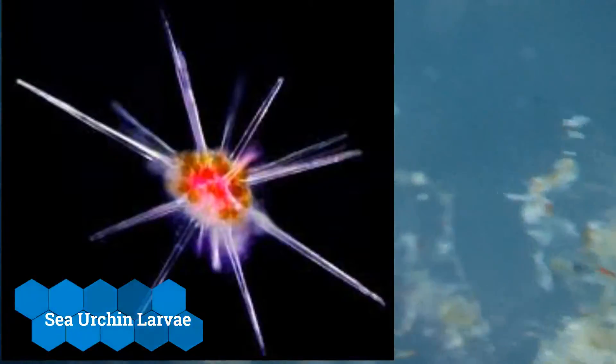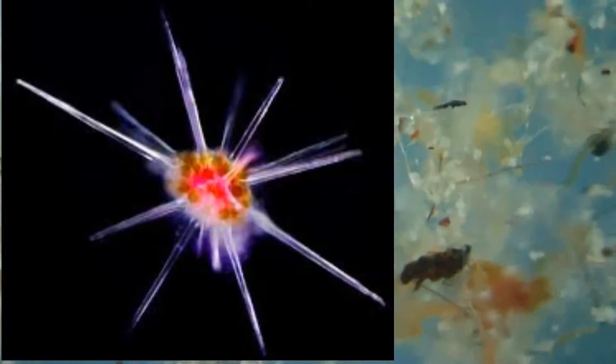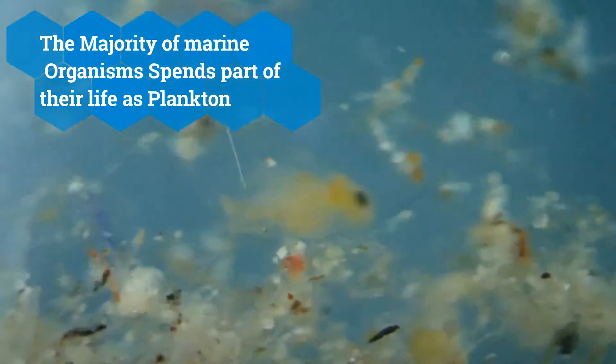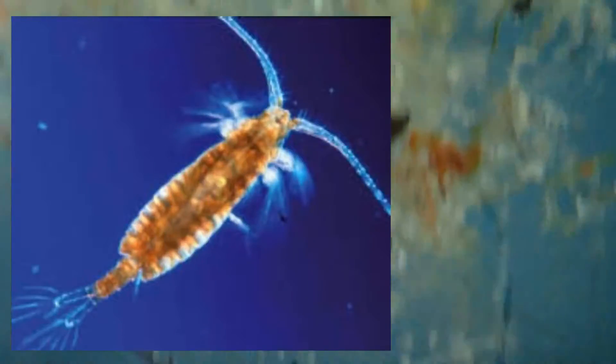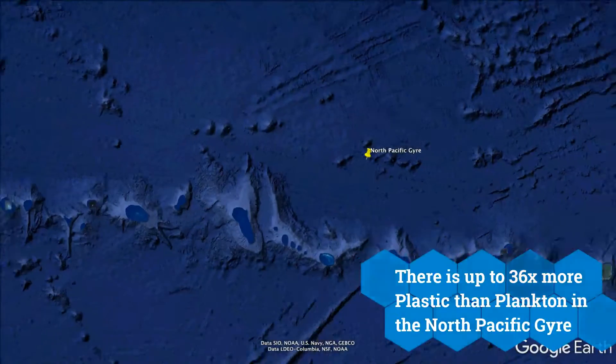There are about one million planktons in one teaspoon of water. This equals around 20 grams of plankton in one cubic meter of water. Clearly there is a lot of plankton — in fact, copepods are the most abundant animal on this planet. Still, in some places they are already outnumbered by plastic.